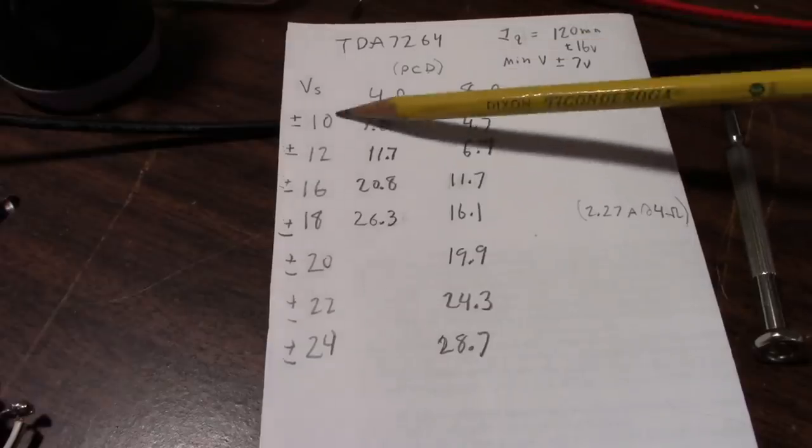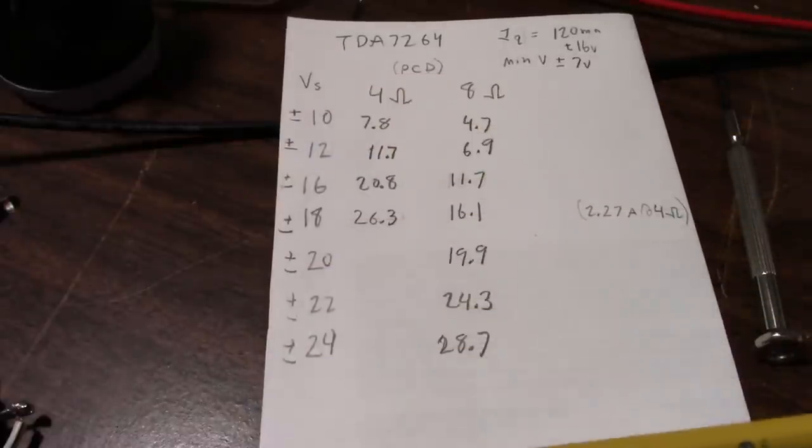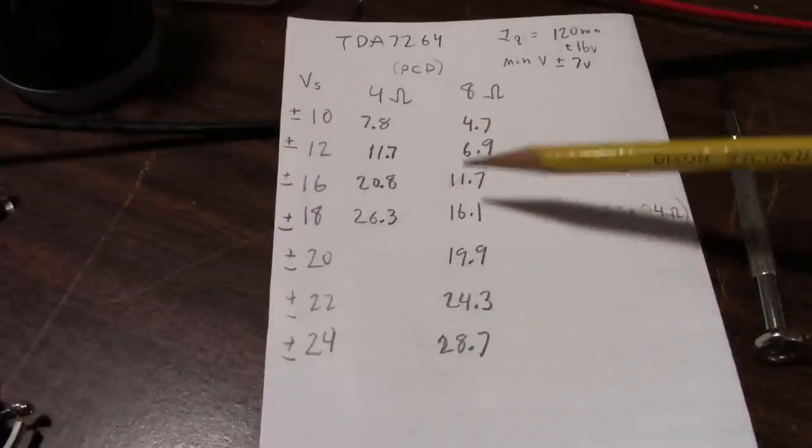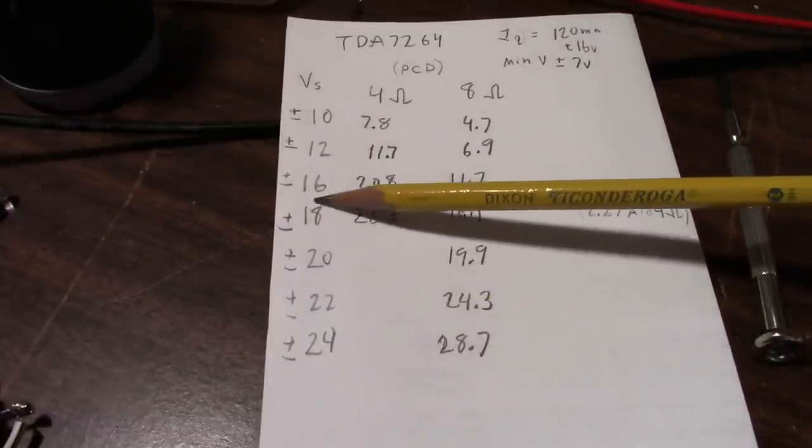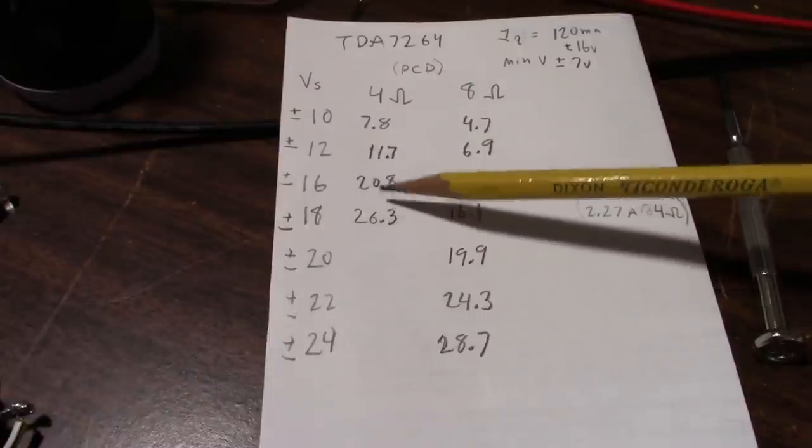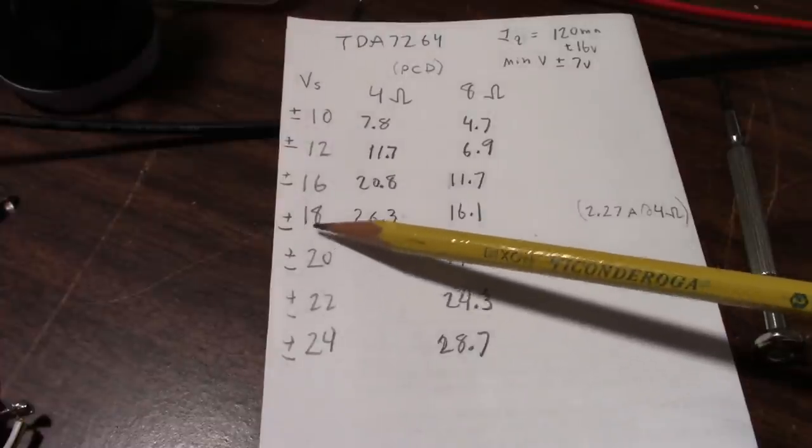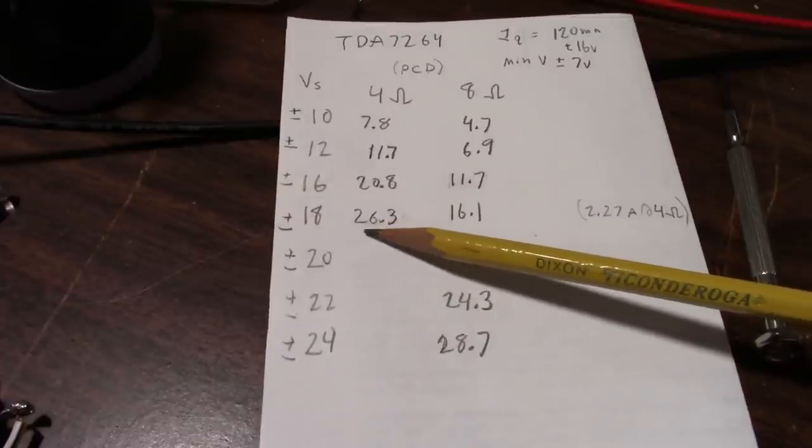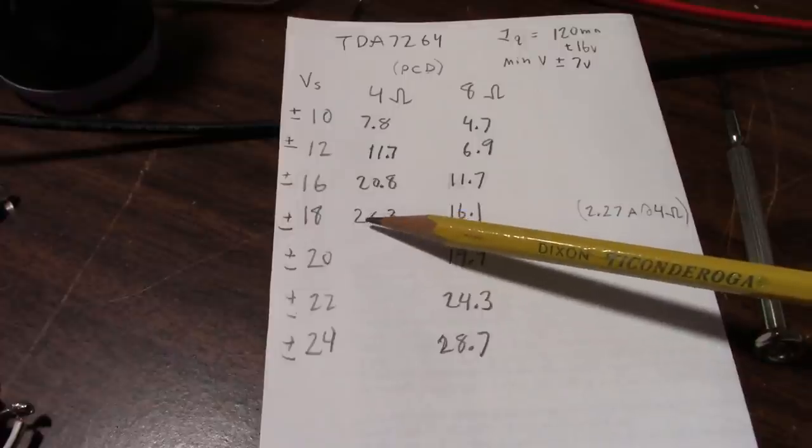Okay, here's the power output measurements. This column is the supply voltages showing the plus or minus rail voltage. This is the 4 ohm measurements and 8 ohm measurements. I measured every 2 volts, but if you notice here, I forgot to put 14 volts in, but you can guesstimate about what value that would be. I went ahead and measured the amplifier at 4 ohm loads at plus minus 18 volts. And I got a pretty reasonable 26.3 watts.